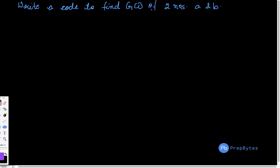So here we are writing code to find GCD of two numbers using Euclidean's algorithm of division.